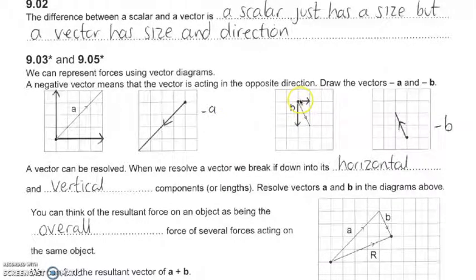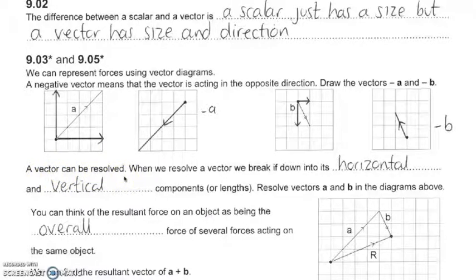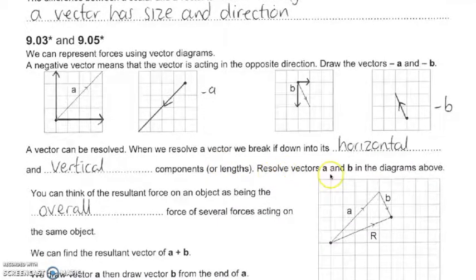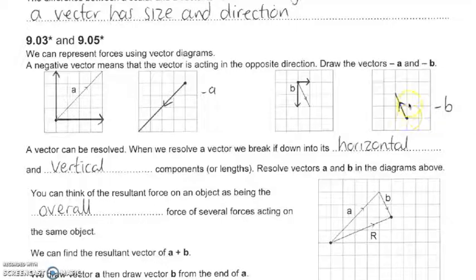Similarly, if vector B is going diagonally downwards, it has a horizontal and a vertical component. With a minus sign, the direction arrow goes in the opposite direction. When we say a vector can be resolved, it means we can break it down into its horizontal component and its vertical component. For minus B, there will be a vertical component with the arrow pointing upwards and a horizontal component pointing from right to left.